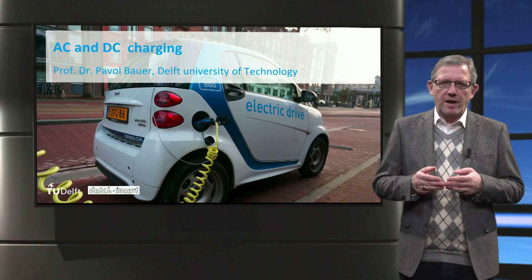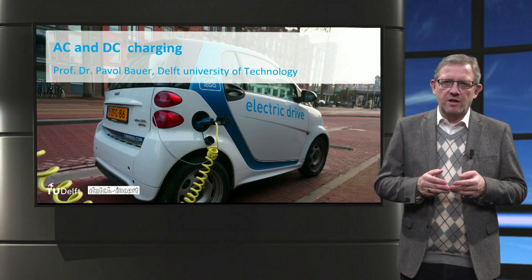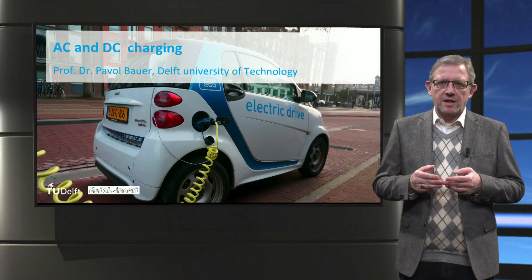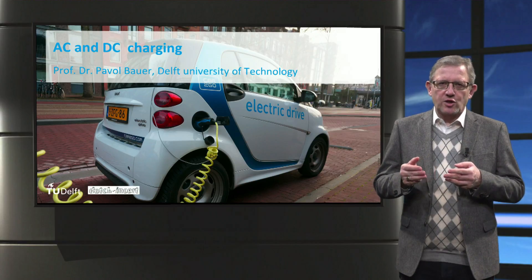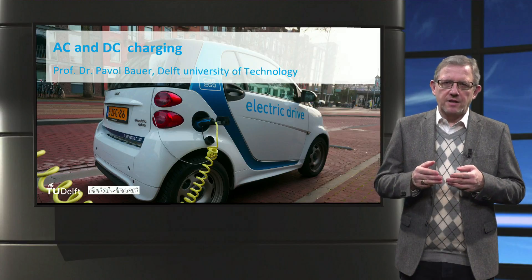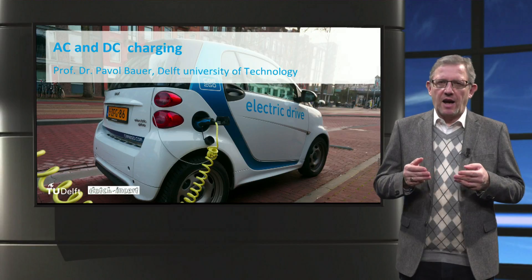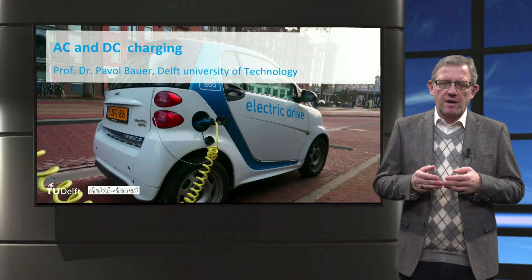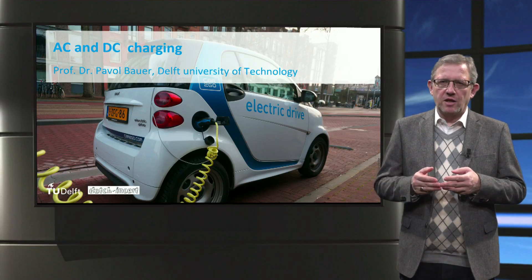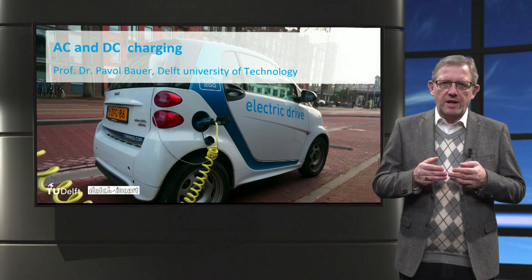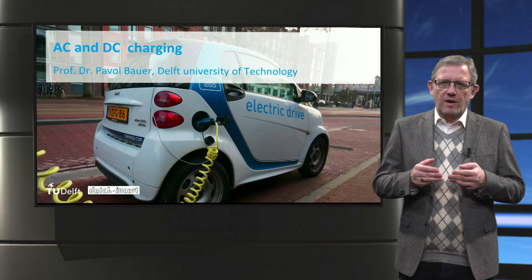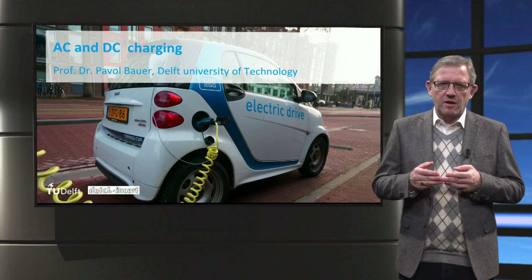To wrap up, electric vehicles can be charged by AC or DC charging. The main difference is that in DC charging, the AC to DC power converter is placed outside the vehicle in an off-board charger, and hence the charging power can be as high as 350 kW. In the case of AC charging, the on-board charger is used, which is usually restricted to less than 22 kW. Finally, since car manufacturers have not agreed on a single connector, various connectors are used for AC and DC charging globally.